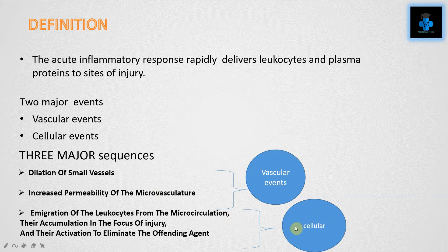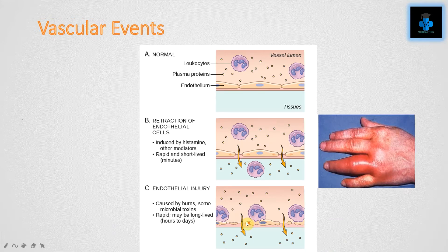Retraction or dropout of the endothelium results in entry of fluid and plasma proteins into the extracellular space. We also have the cellular event, in which the emigration of leukocytes from the microcirculation, their accumulation in the focus of injury, and their activation to eliminate the offending agent takes place.